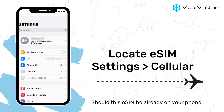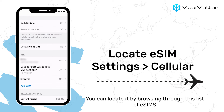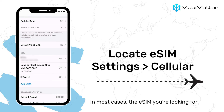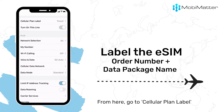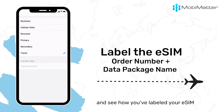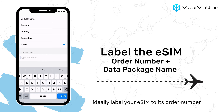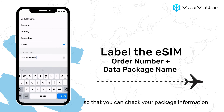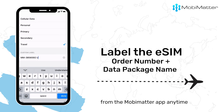Should this eSIM already be on your phone, you can locate it by browsing through the list of eSIMs. In most cases, the eSIM you're looking for is the bottom-most one. From here, go to Cellular Plan Label and see how you've labeled your eSIM. Ideally, label your eSIM to its order number so that you can check your package information from the MobiMatter app anytime.